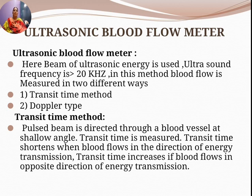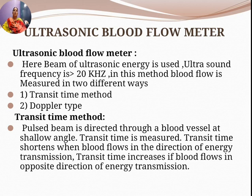Blood flow is measured in two different ways using ultrasonic flow meters: the transit time method and the Doppler type method.